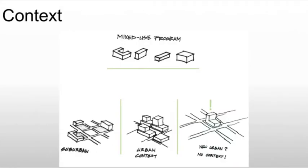We also have to deal with context. The architect should always take into account the surroundings of the building they're creating. For example, you wouldn't want to put a big ugly warehouse on a beach — it wouldn't make sense and would be a waste of the space. Context also affects scale.